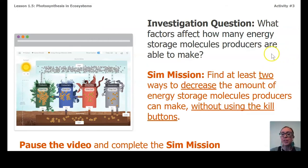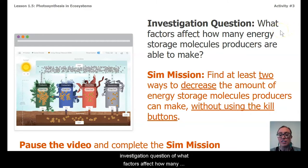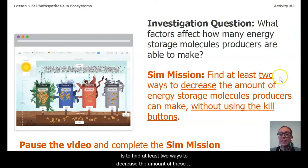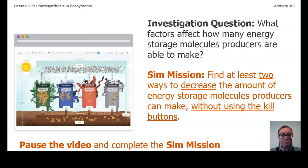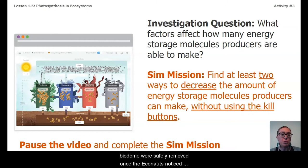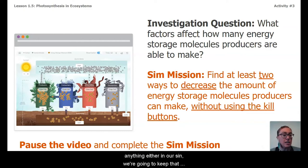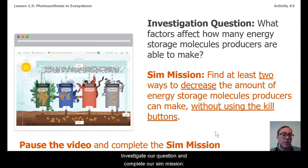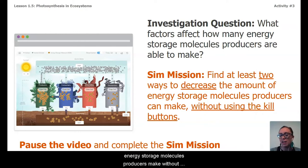So let's investigate these inputs and reactants of our photosynthesis chemical reaction a little bit further, and we're going to use the SIM to help us do that. Our mission in the SIM, in order to address the investigation question of what factors affect how many energy storage molecules producers are able to make, is to find at least two ways to decrease the amount of these molecules by experimenting in the SIM. My constraint is: without killing anything — you can't use those kill buttons, since the Econauts safely removed the animals and plants when they noticed trouble. What are two ways you could decrease the amount of energy storage molecules producers make without using the kill buttons?